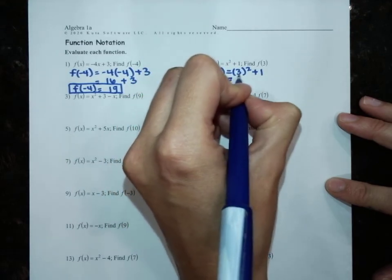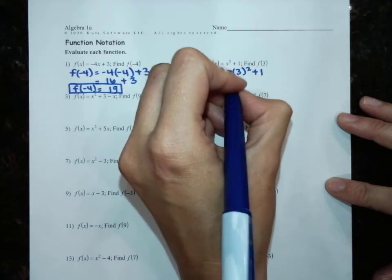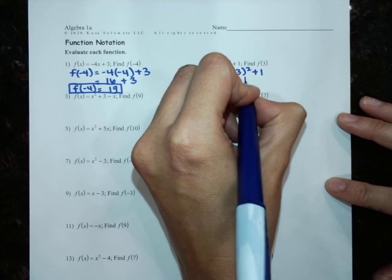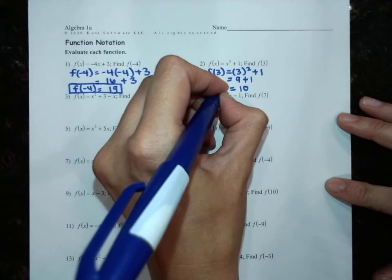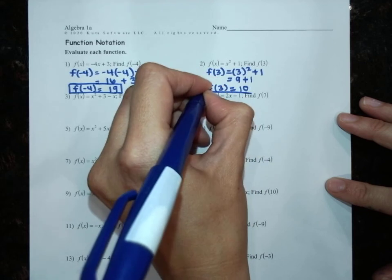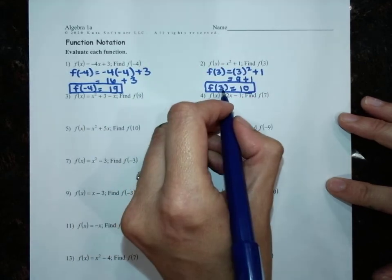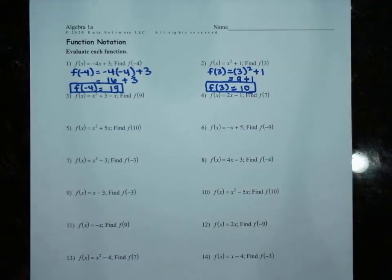So we have 3 squared. Remember, 3 squared is 3 times 3. That's 9 plus 1, which is 10. So f of 3 equals 10. When our input is 3, our output is 10.